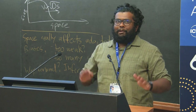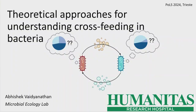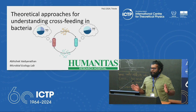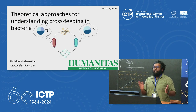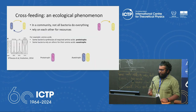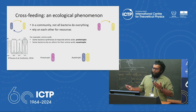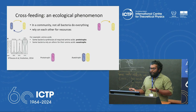I'll be talking about the work I've been doing over the last one and a half years. The main focus is to develop theoretical models to explain amino acid cross-feeding in bacteria. Cross-feeding is a kind of barter system — you produce something I want, I produce something you want, and we exchange. This is ubiquitous in bacterial communities. You can categorize bacteria into prototrophs, which are self-sufficient and produce all required amino acids, and auxotrophs, which cannot produce one or more amino acids.